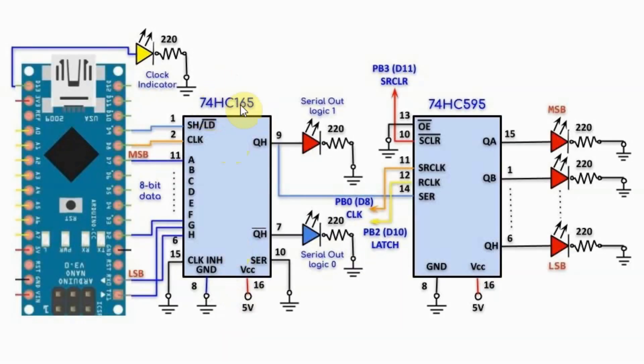So the 74165 after 8 clock pulses will convert the parallel input into a serial output, and the least significant bit of the input will be shifted out first.